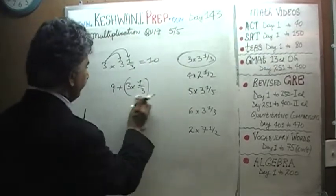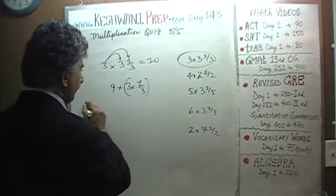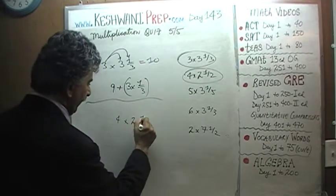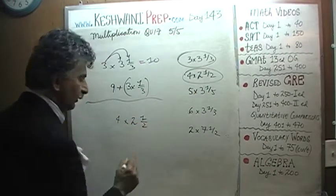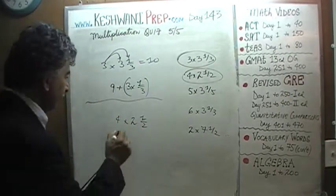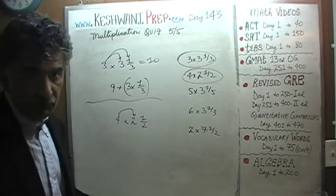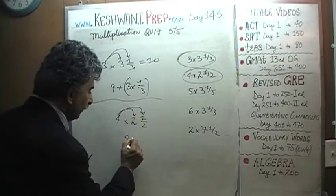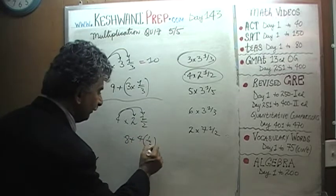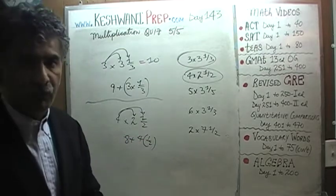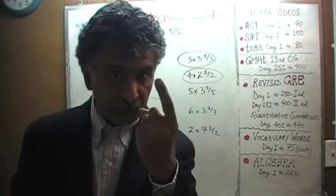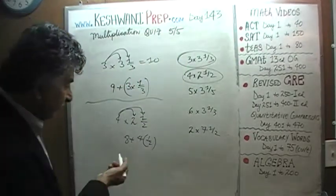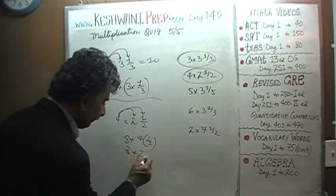Let's do one more. Next one: four times two and a half. Four times two and a half is simply four times two, which we know is eight, plus four halves. Four halves make a two — two halves make one, four halves make two. So it's just eight plus two.